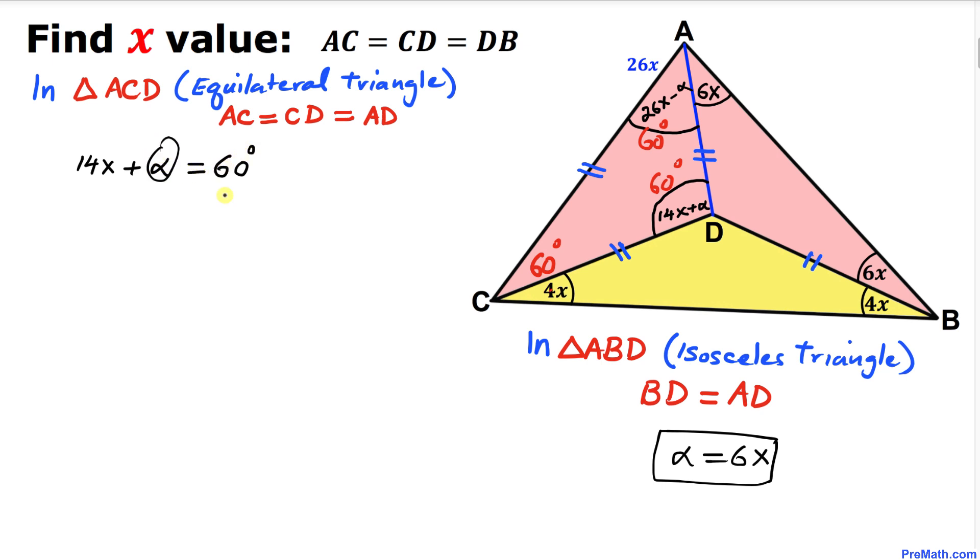And we know that alpha is 6X. Let's go ahead and replace that one. 14X plus 6X equal to 60 degrees. So on the left-hand side, this is going to become 20X equal to 60 degrees.